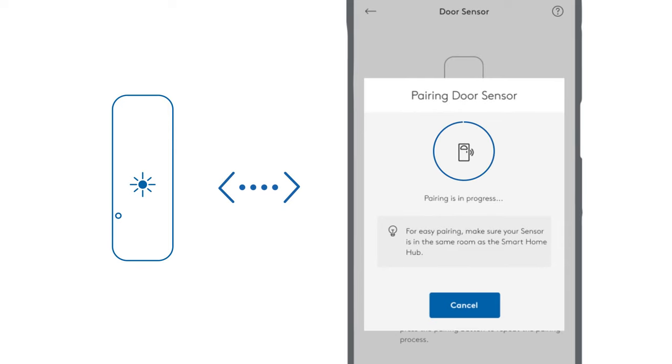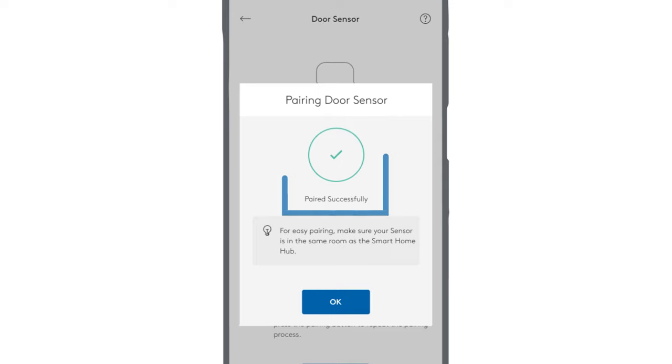The app will indicate when it's done pairing. Now you're ready to place the sensor on your window or door.